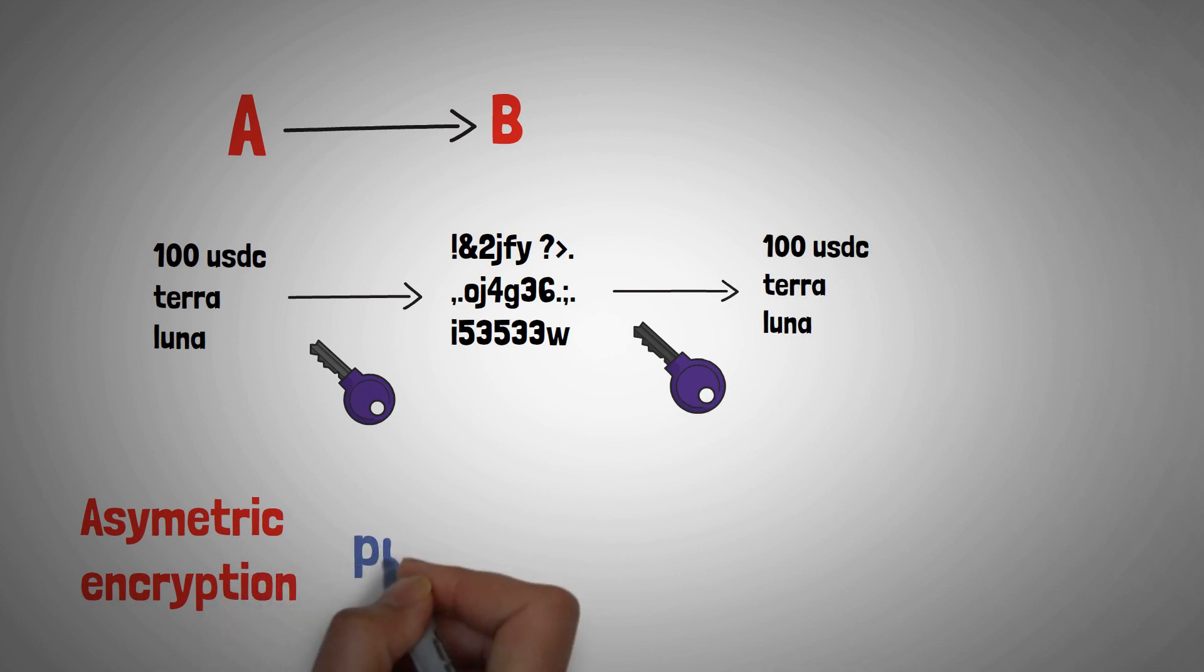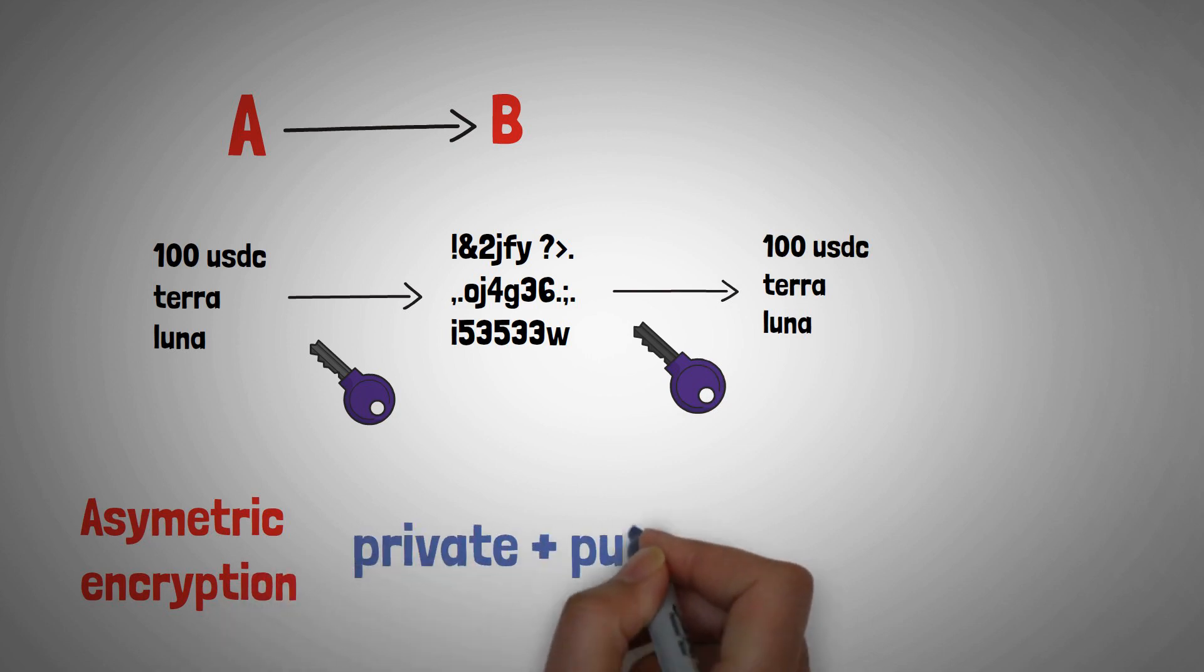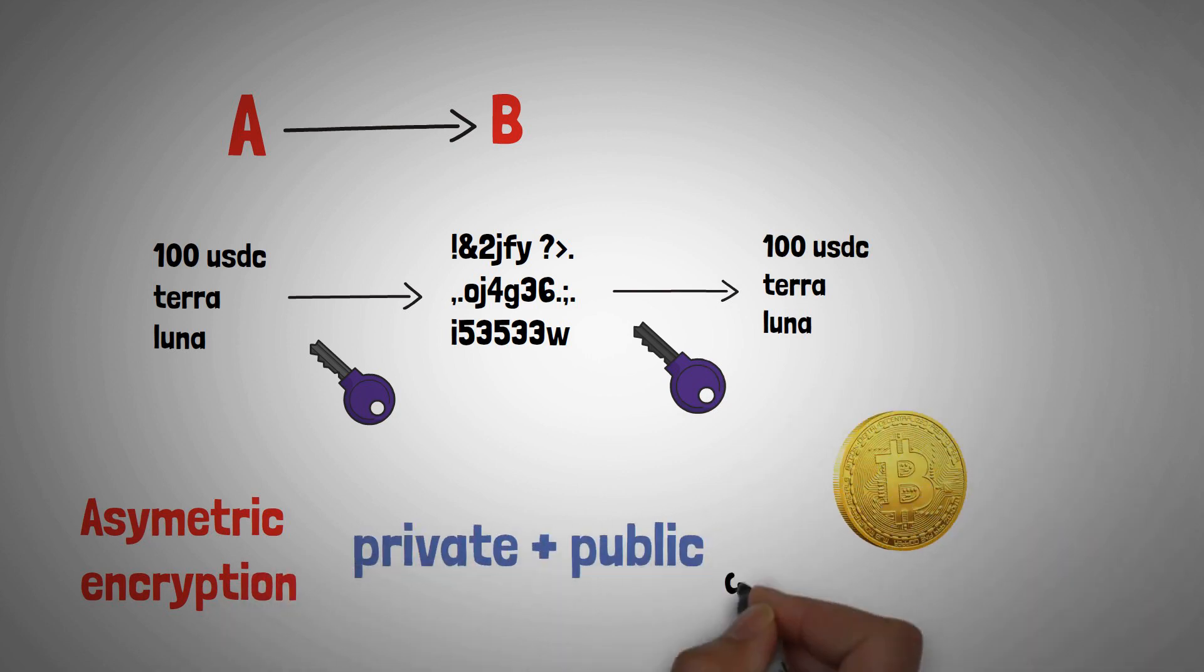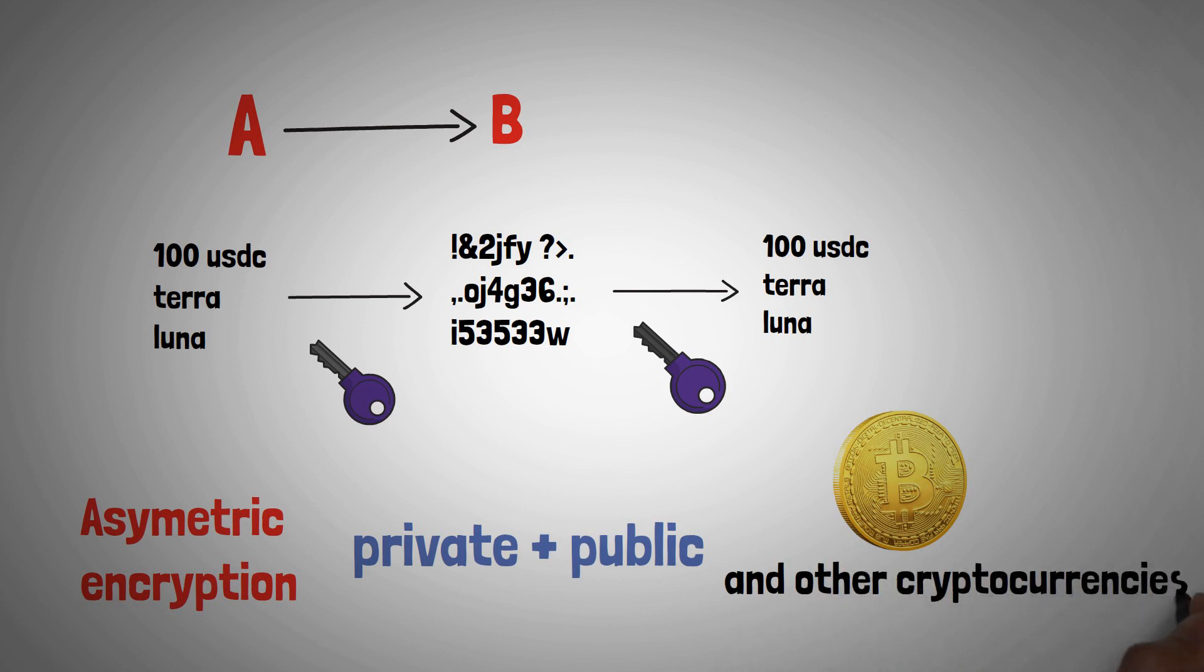In the case of asymmetric encryption, it uses both private and public keys. This type of key encryption is used in Bitcoin and cryptocurrencies.